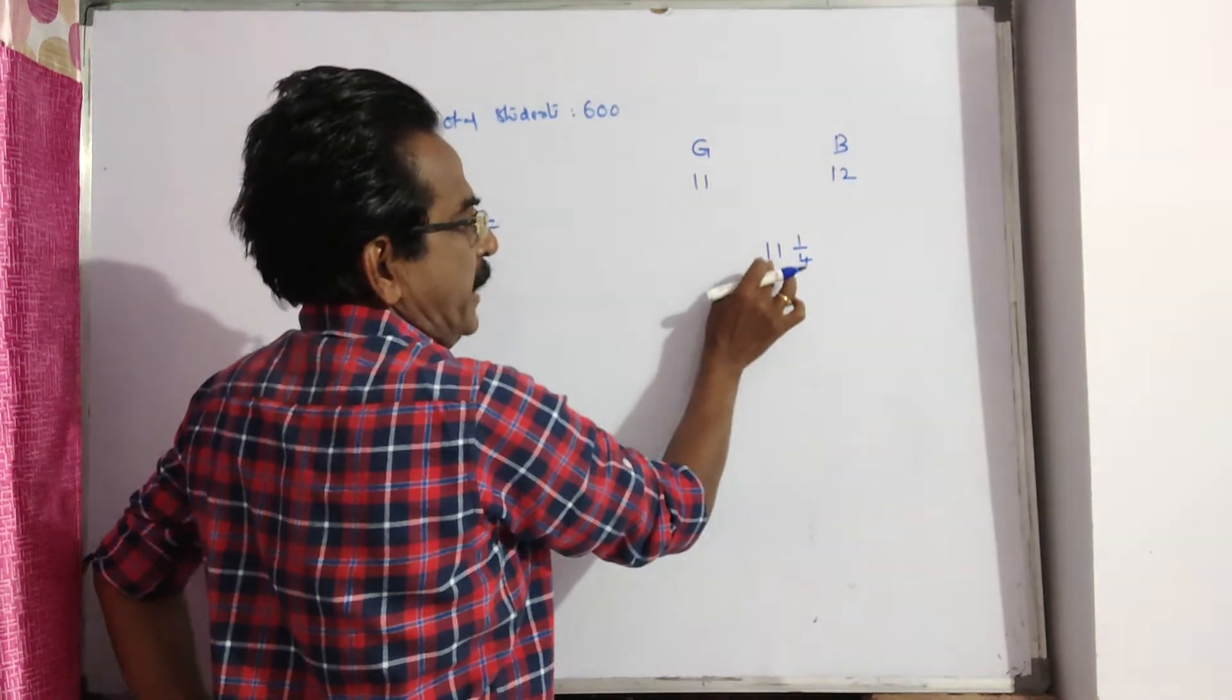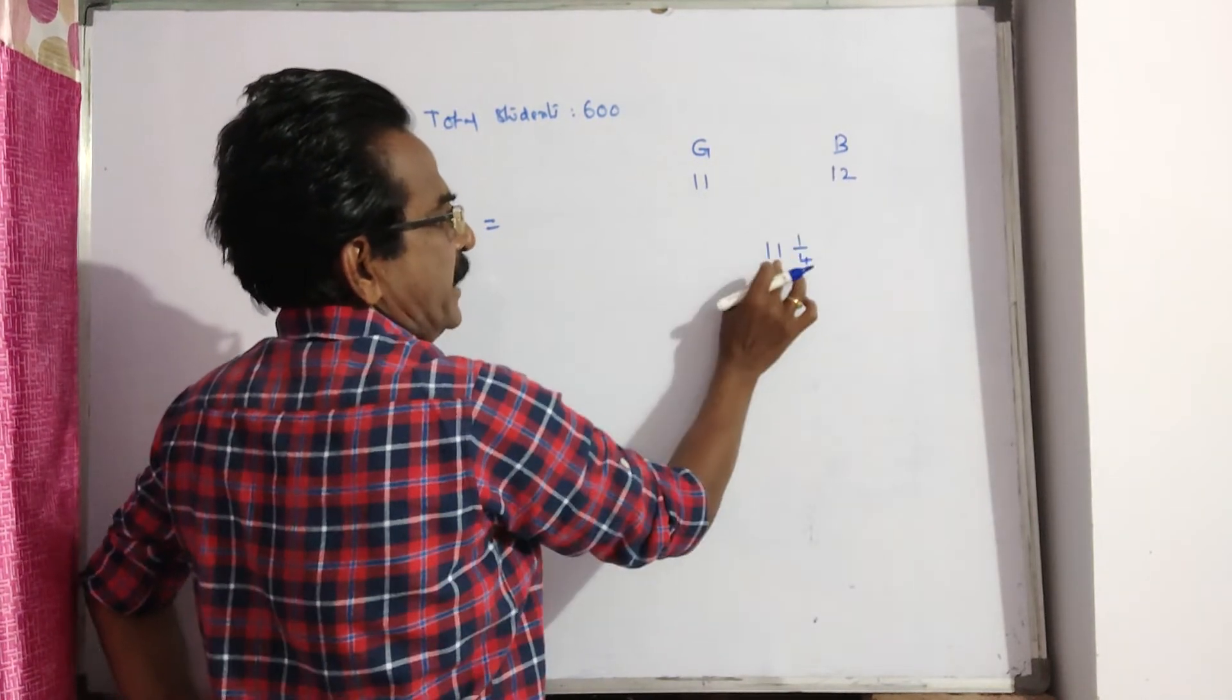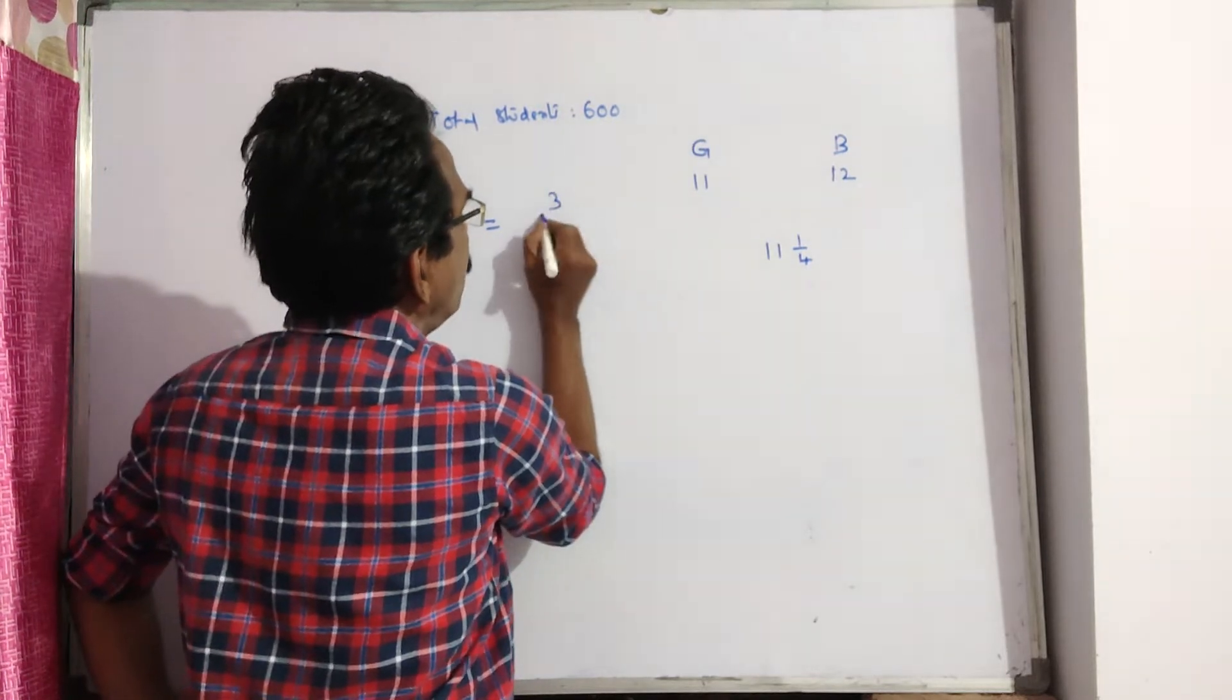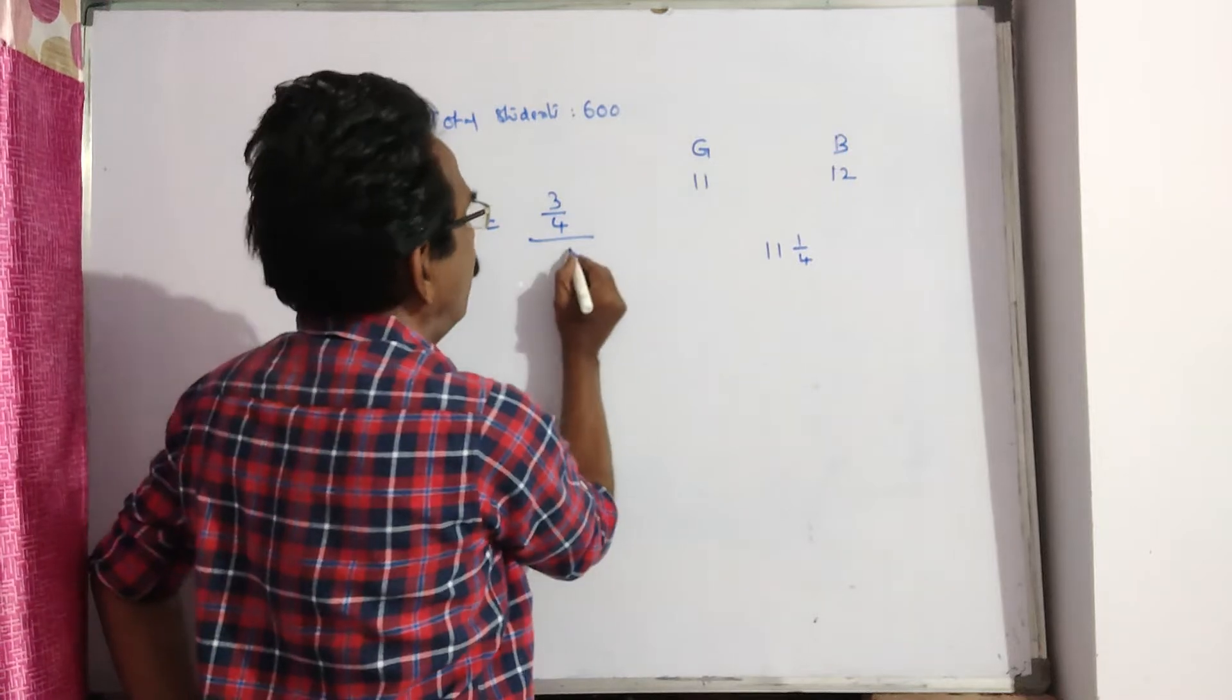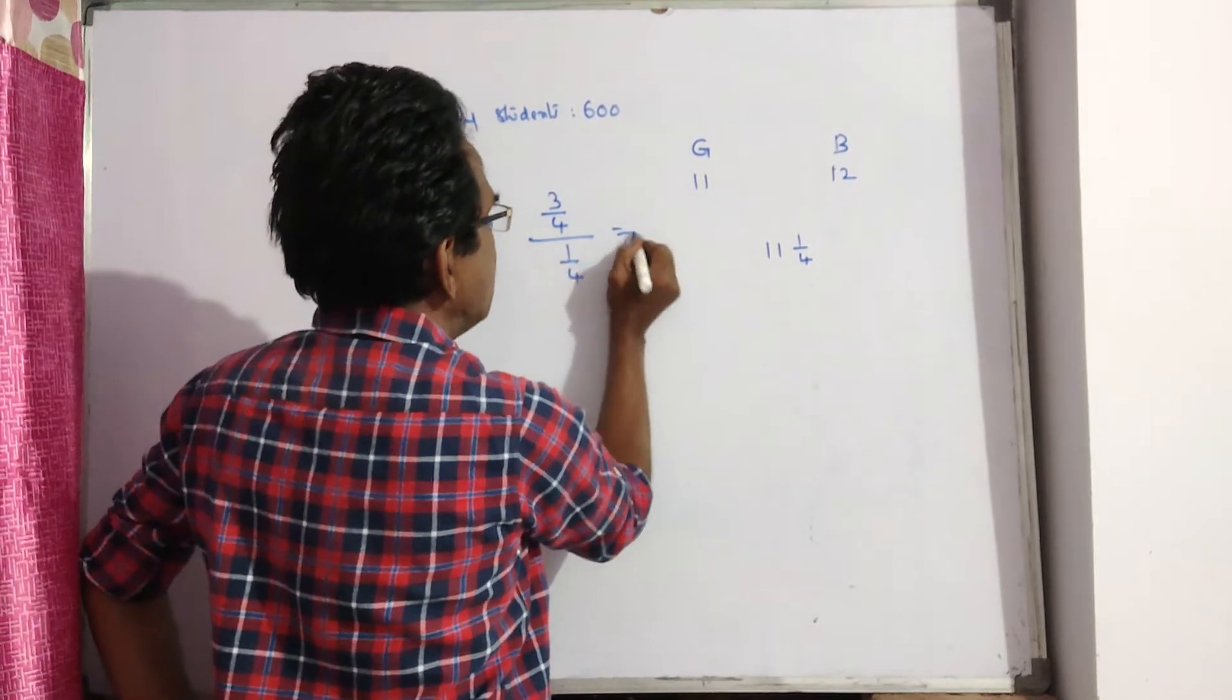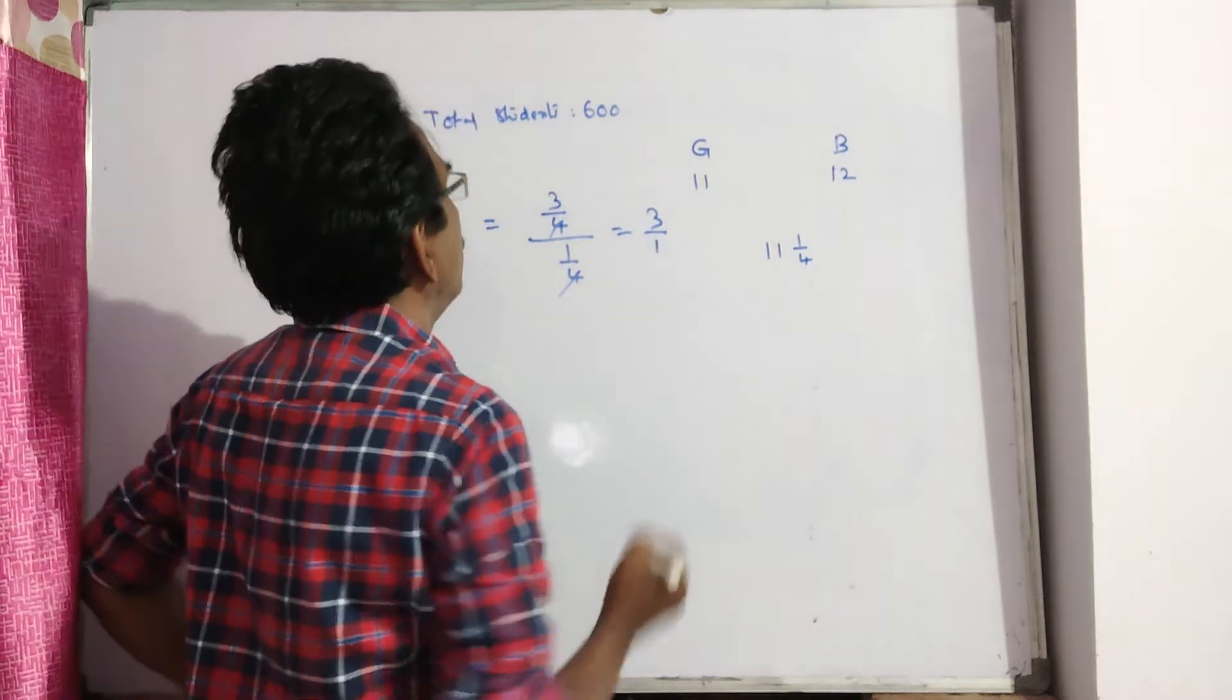This minus this by this minus this. 12 minus 11 1 by 4. 3 by 4 by 11 1 by 4 minus 11. 1 by 4. That is equal to 3 is to 1.